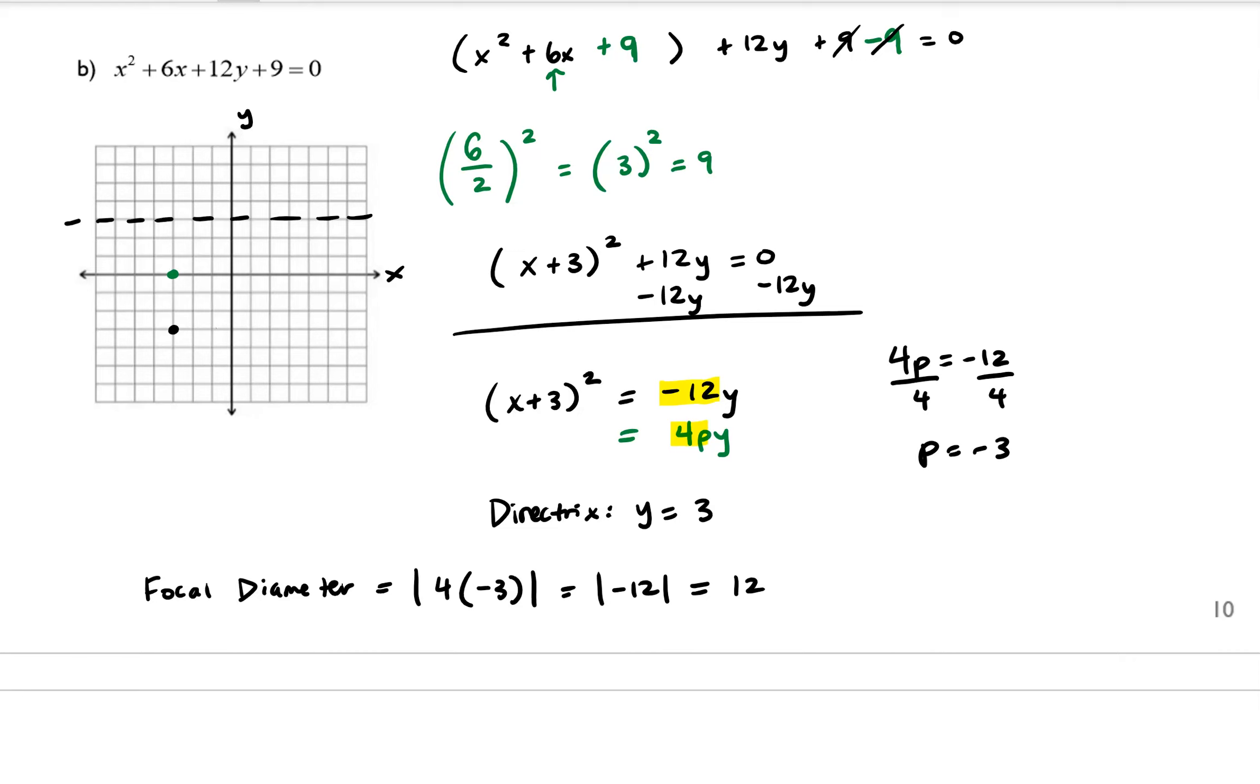So 1, 2, 3, 4, 5, 6 will land us right there. And then we want to start at the focus and go left 6 units. 1, 2, 3, 4, 5, 6. It's going to be kind of off the grid. But our parabola is going to look something like that. And that completes example B for us.